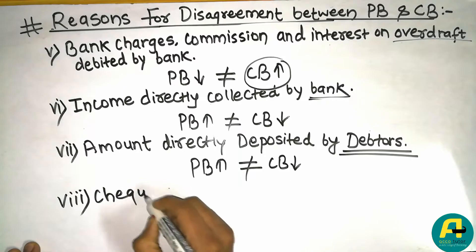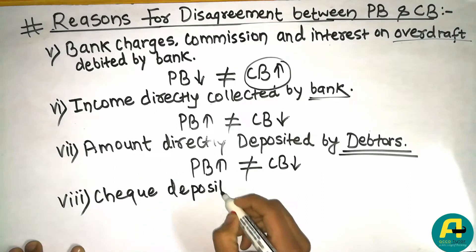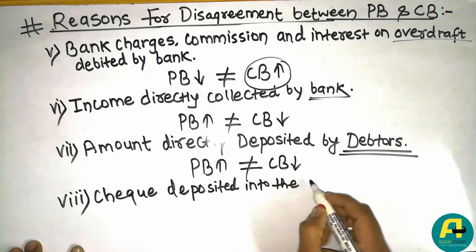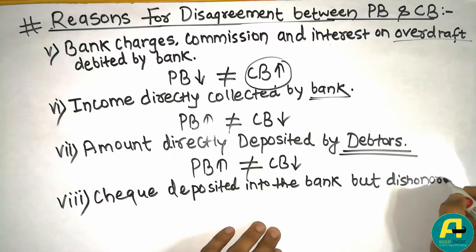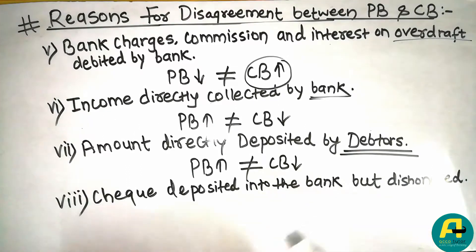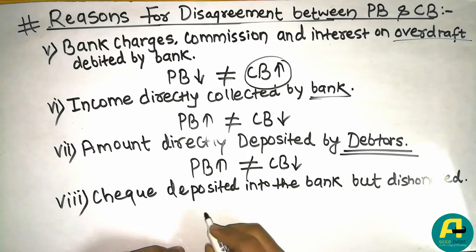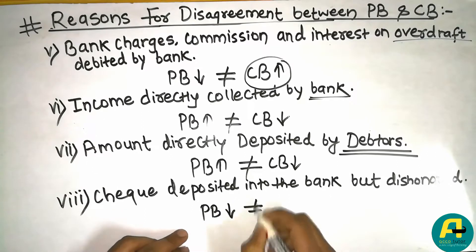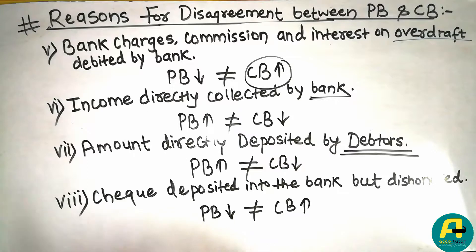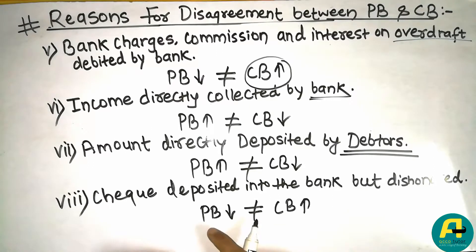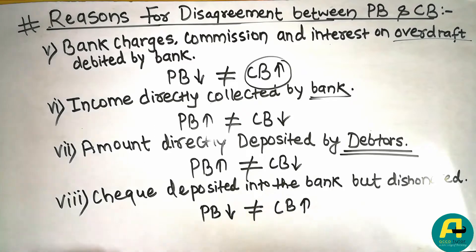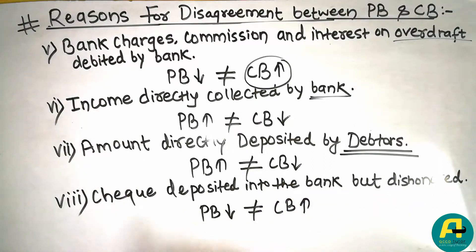The next reason is: check deposited into the bank but dishonored. When a check is deposited in the bank, the cash book balance increases because you record it upon receipt. However, if the bank dishonors or cancels the check — for example due to insufficient balance in the issuer's account — the pass book balance will not increase. In that condition the bank will dishonor the check.